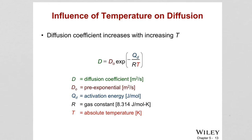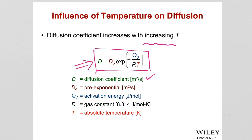The diffusion coefficient D in the flux equation changes with temperature — it has a temperature dependency. As temperature increases, the diffusion coefficient increases. Through probability calculations, an equation was found defining the diffusion coefficient's temperature dependence: D equals D-naught times exponential of negative Q over RT, where Q is the activation energy for diffusion, R is the gas constant, and T must be in Kelvin.